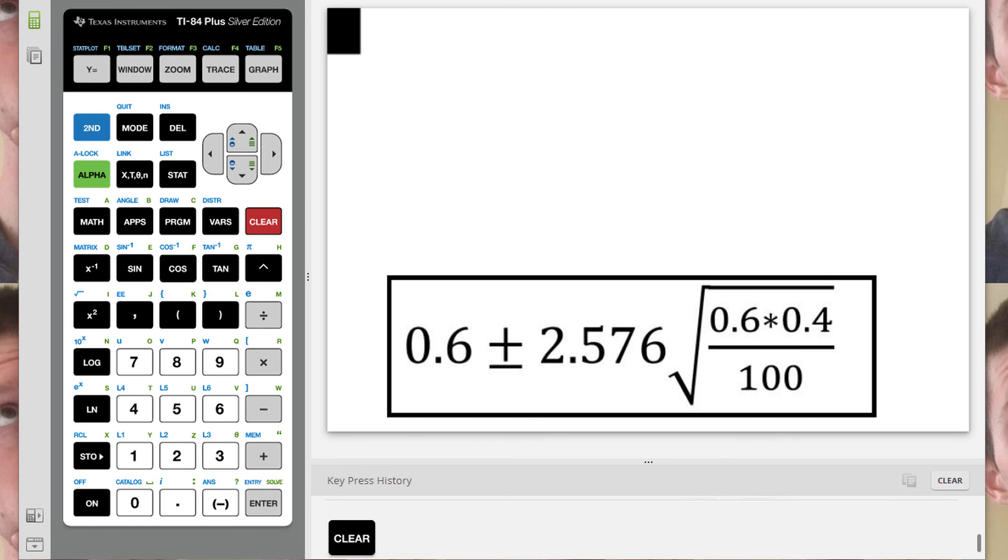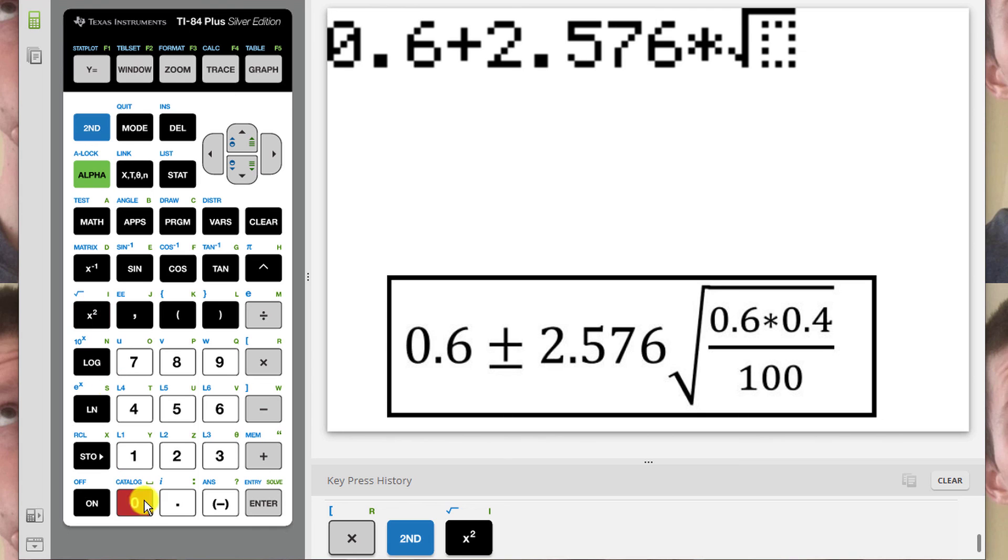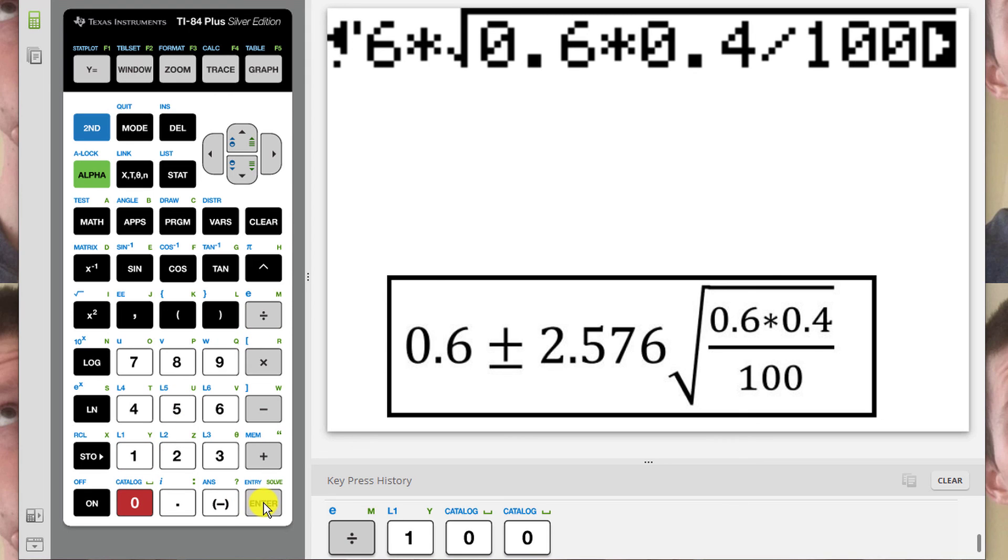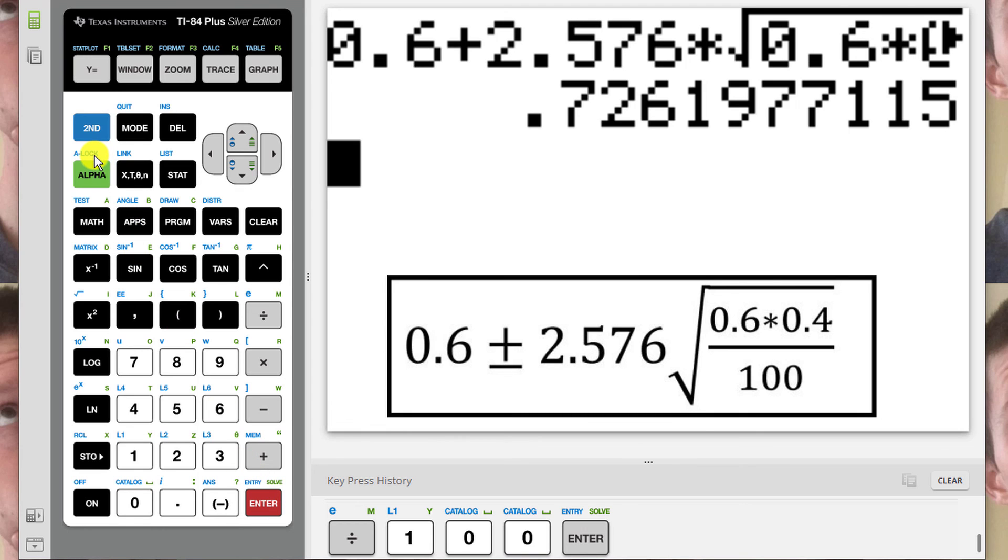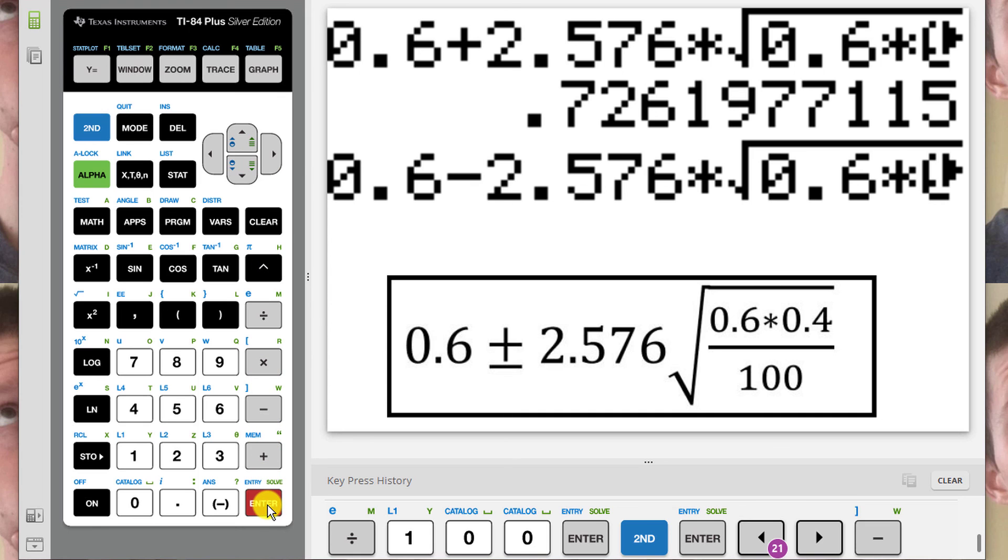Since the formula is a tiny bit more involved, I figured I'd show you how to type it in into the calculator. I have a TI-84 calculator here, but any scientific calculator should work similarly. Type 0.6 plus 2.576 times the square root of 0.6 times 0.4 divided by 100. After that, you might have to close the parentheses on some calculators. If we press enter, we get the upper bound of the confidence interval. The lower bound is just the same thing, but the plus sign needs to change to a minus sign. On this calculator, I can press second, and then enter, which brings up my previous calculation. And then I can scroll back through to the left, and change this plus sign to a minus sign. And when I press enter, we get the lower bound.